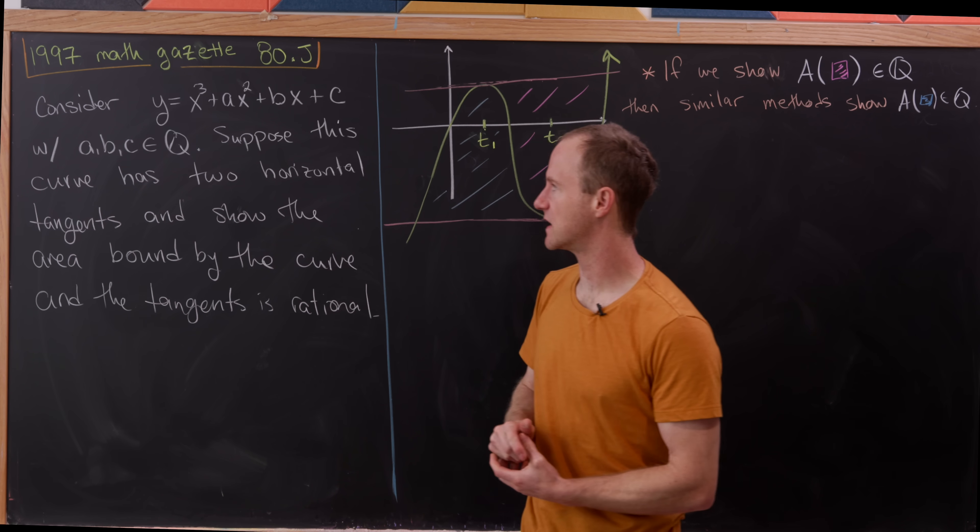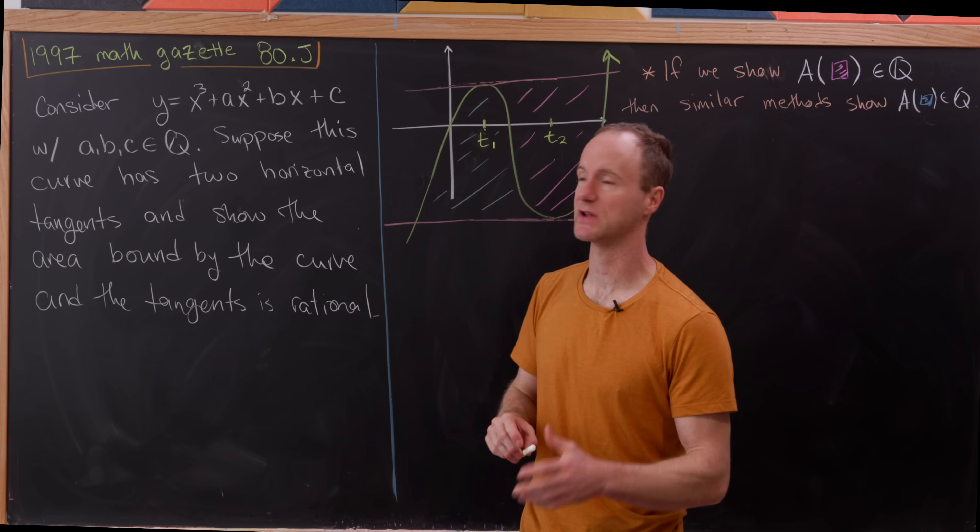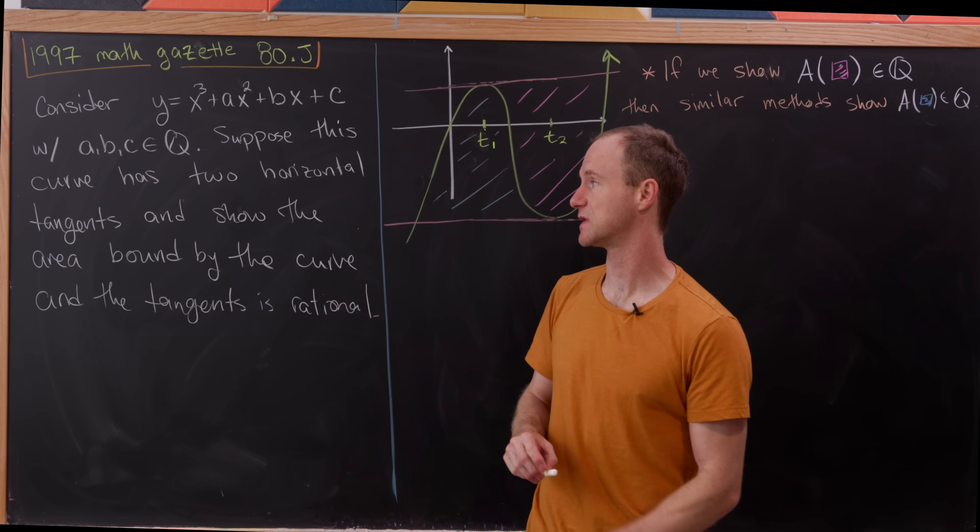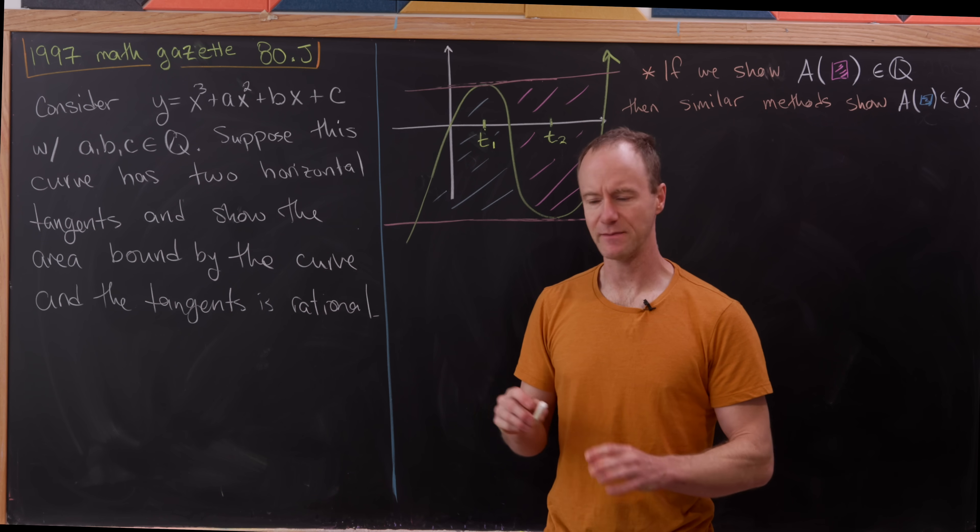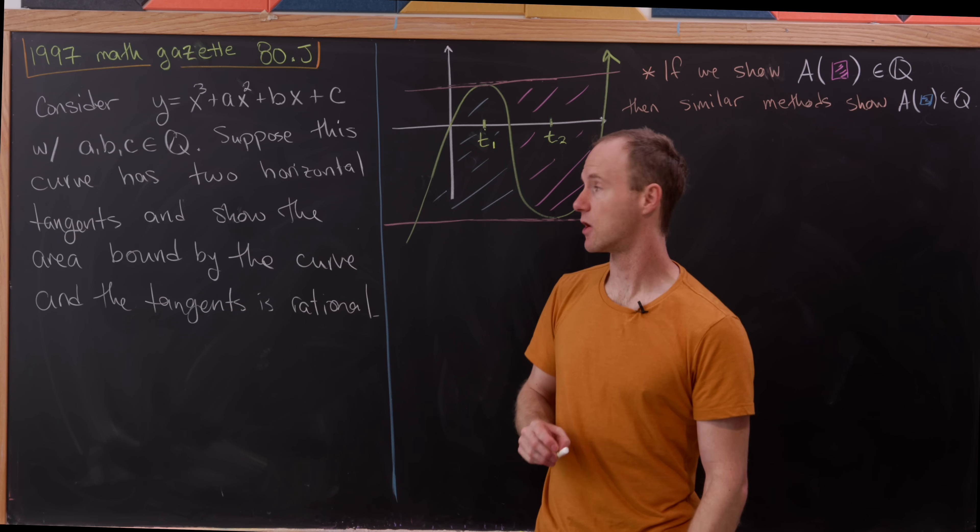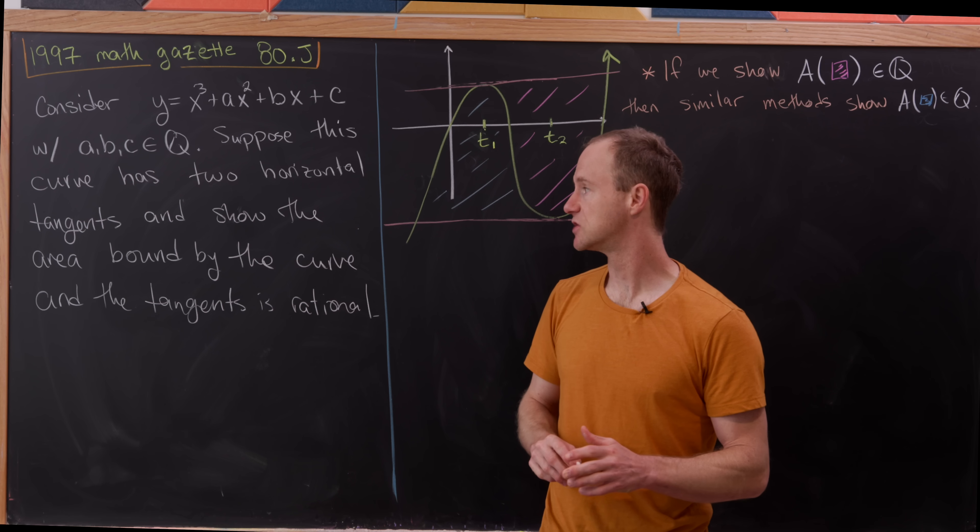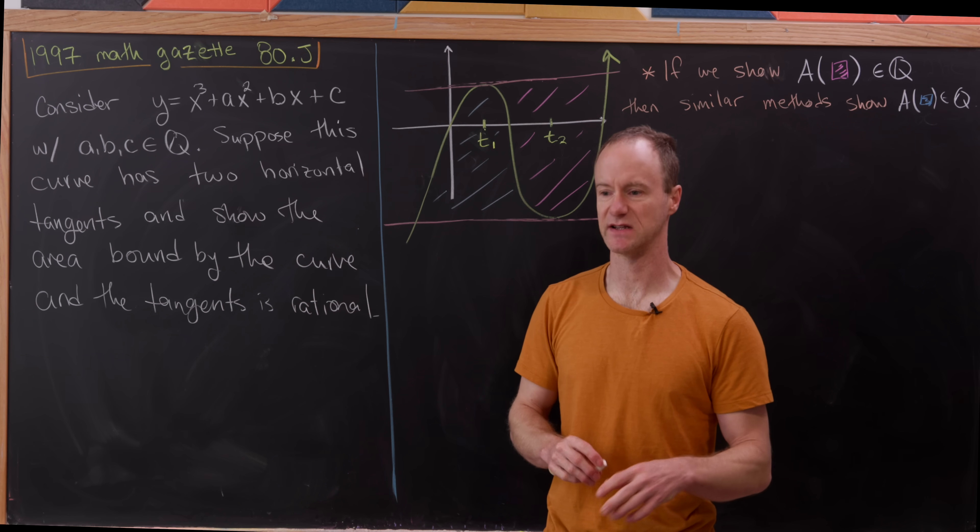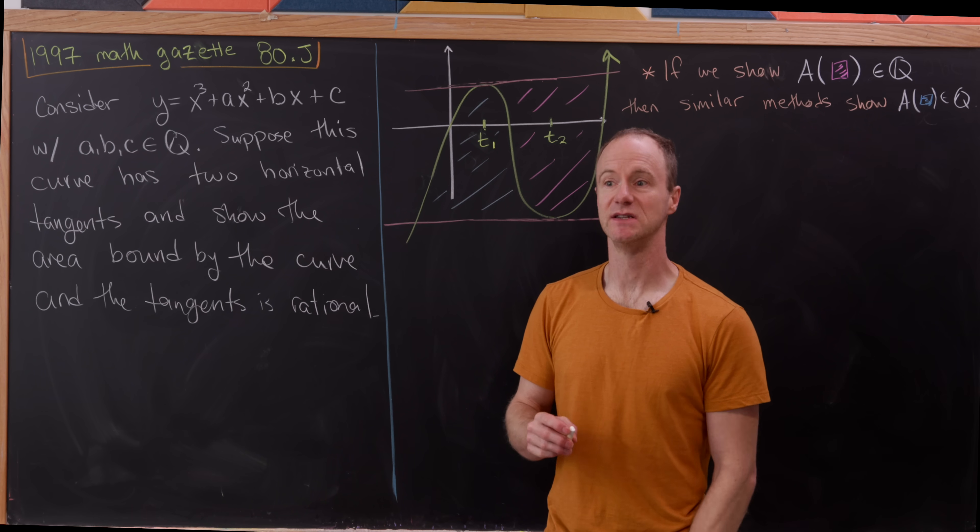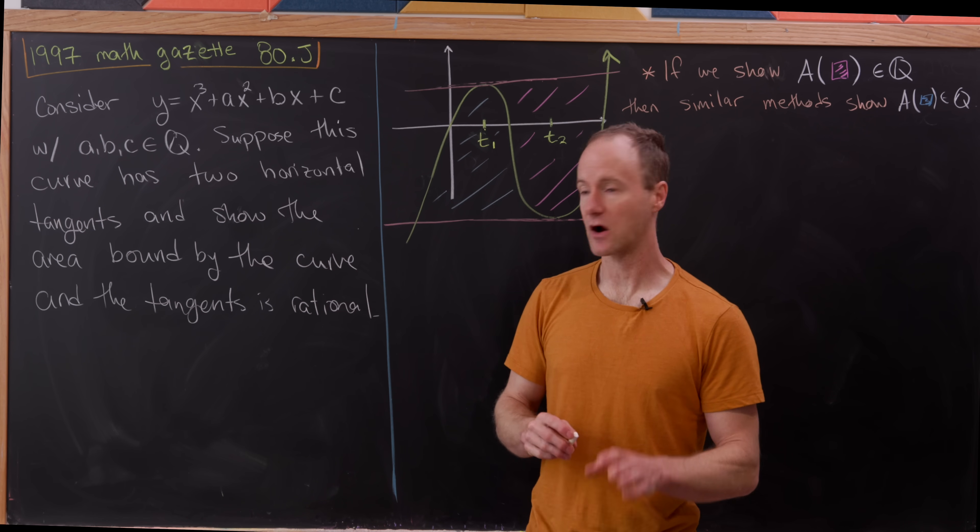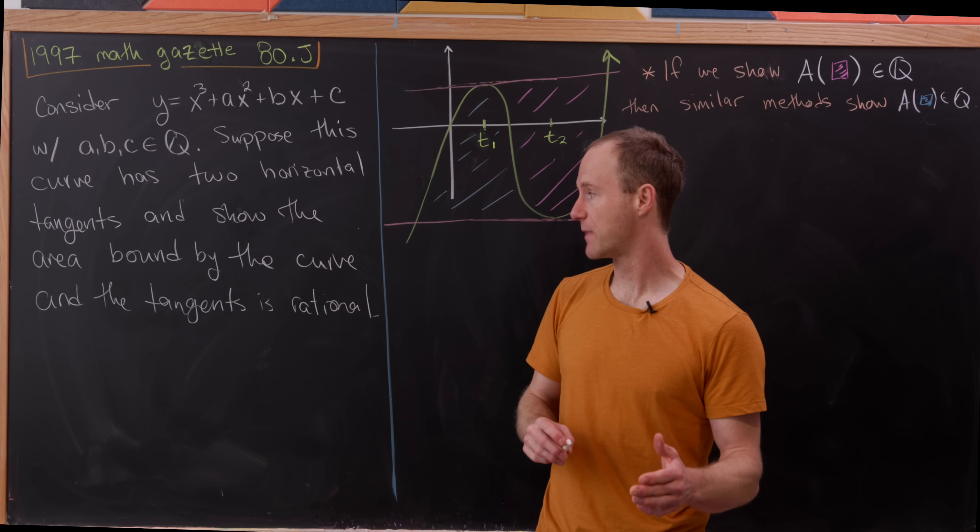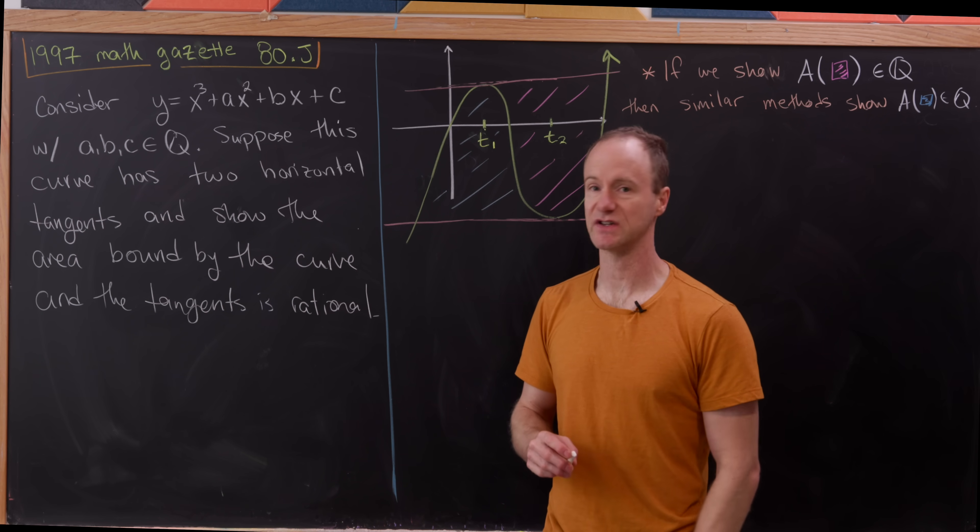So we'll say that it's y equals x cubed plus ax squared plus bx plus c. And I mean nice in two different ways. So a, b, and c are rational. And then this curve also has two distinct horizontal tangent lines. And then our goal is to show that the area bound by the curve and the tangents is rational.